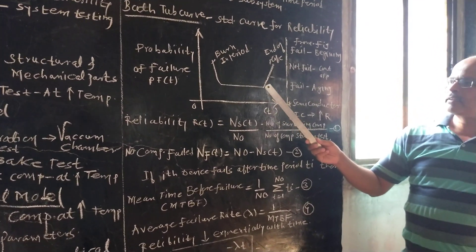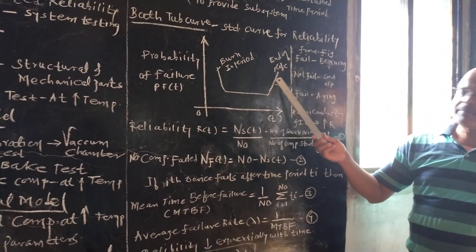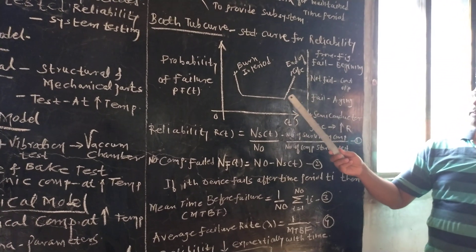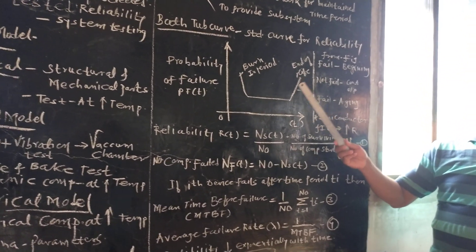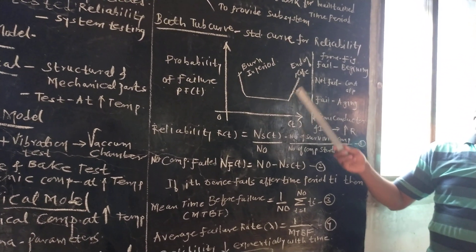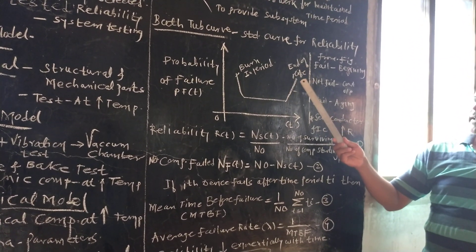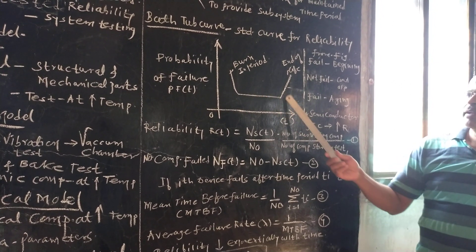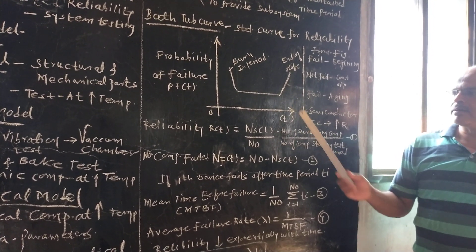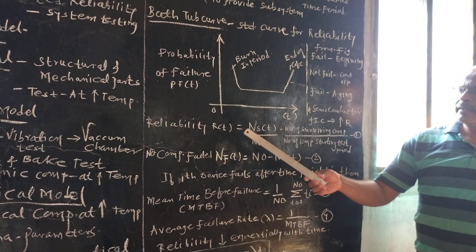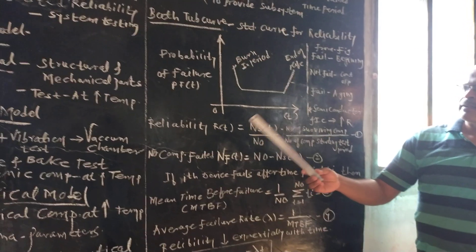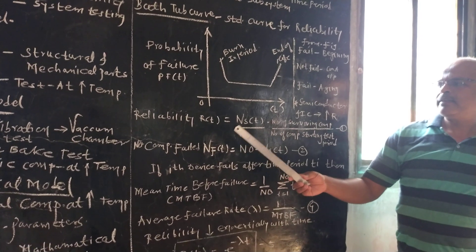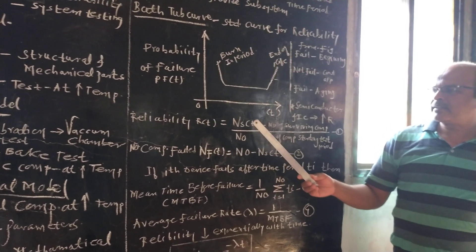Next, due to the aging effect, components begin to fail again. This final stage of failure due to aging is called the end of life. Together, these three phases form the bathtub curve.